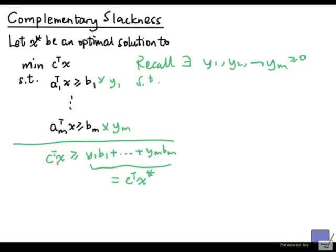The thing is, this left-hand side is C transpose x for any x that satisfies all these constraints. In particular, if I plug in x-star in here, I will get C transpose x-star greater than or equal to C transpose x-star. We know that C transpose x-star is the same as C transpose x-star, so in fact, at x-star, this is equality.